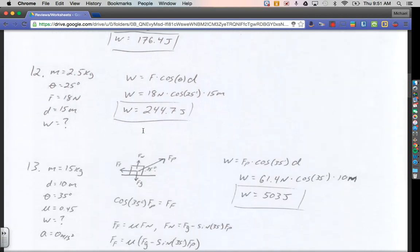Number 12. A child pulls a 2.5-kilogram sled across their yard using a rope that makes an angle of 25 degrees with the horizontal. If the child pulls the rope with 18 newtons of force, how much work does the child do after the sled has gone 15 meters?